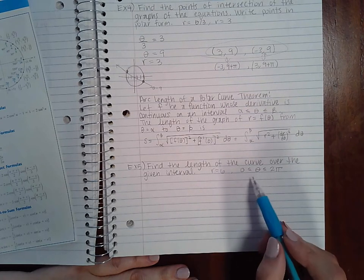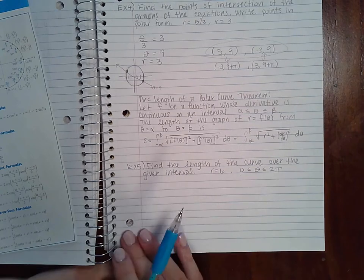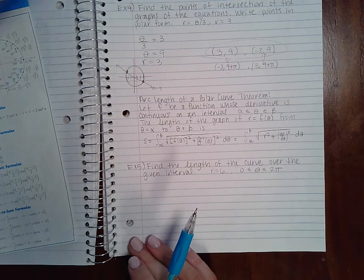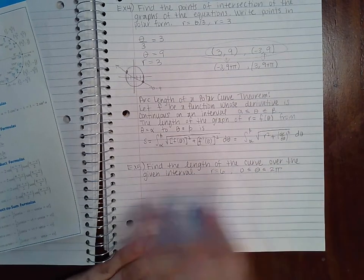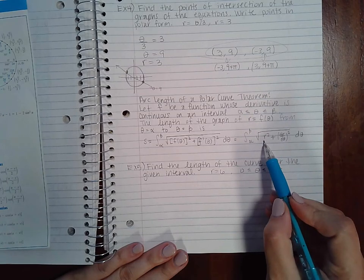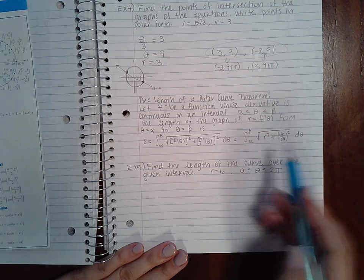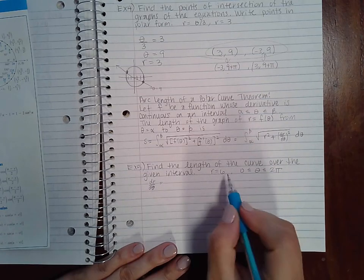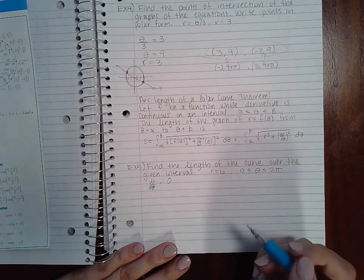So we have here, we have our thetas already set up, and we have R, R is equal to six. And we're going to go ahead and use this formula to plug it in here. Now, in order for me to do it, I need to have R squared and then dr d theta squared. Well, if I take the derivative of R with respect to theta, it's just a constant and the derivative of it is zero.